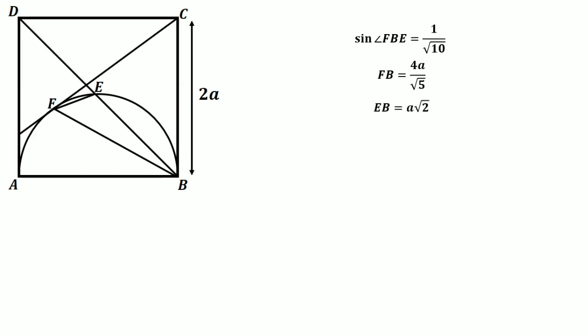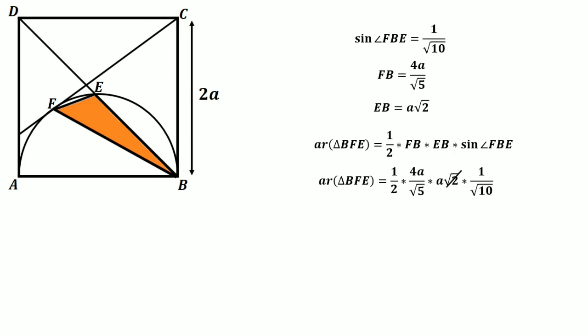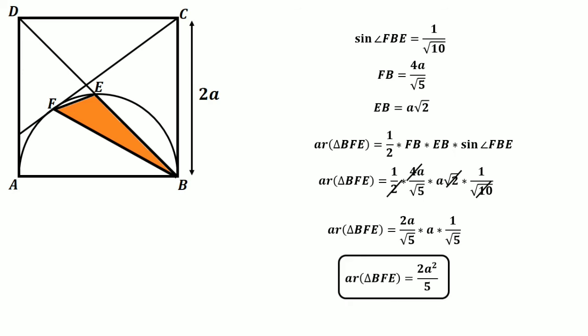With sine of angle FBE equal to 1 over root 10, side FB equal to 4A over root 5, and side EB equal to A root 2, we find the area of the orange triangle. Area of triangle FBE equals half times FB times EB times sine of angle FBE. After putting in the values and simplifying, the area of triangle FBE equals 2A squared divided by 5, and that is our correct answer.